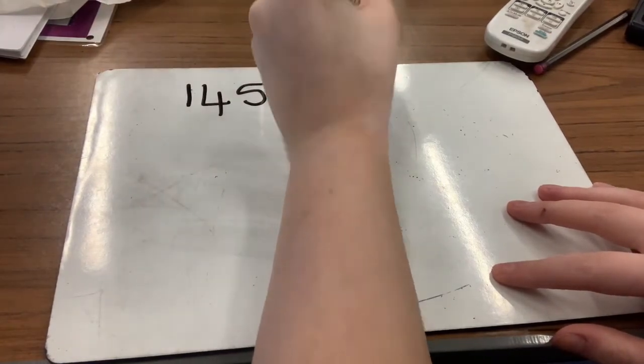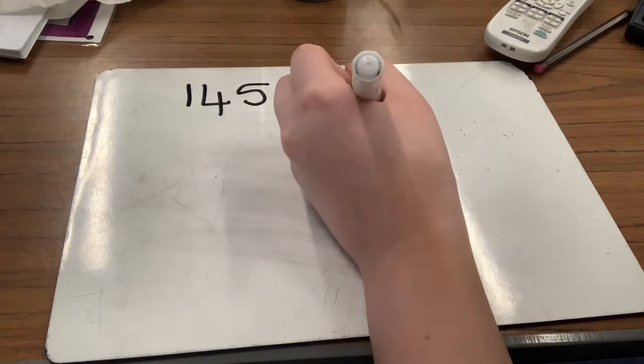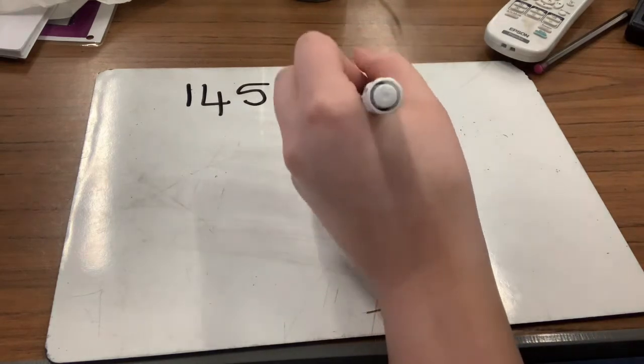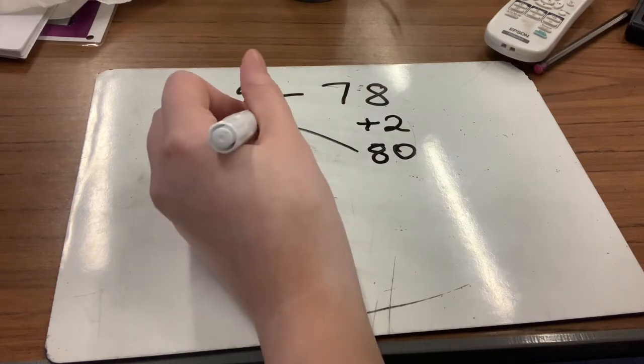Okay, question number four is 145 take away 78. Give that one a go for me. Okay, so we start off by adding up to the next 10, so that would be adding on two to take us up to 80. Now we need to count on from 80 all the way up to 145.